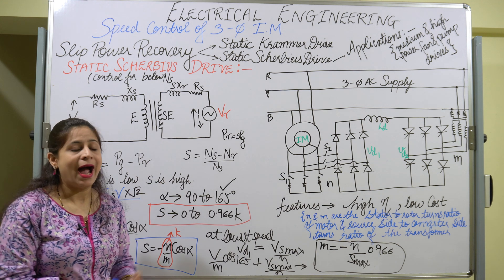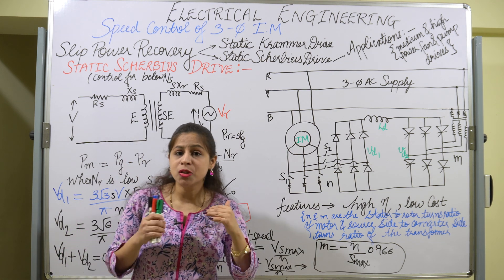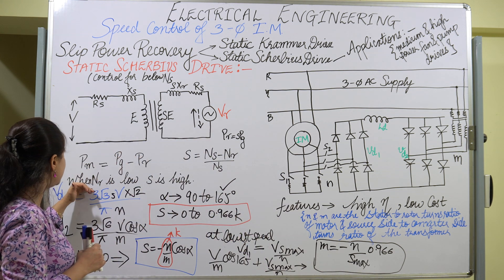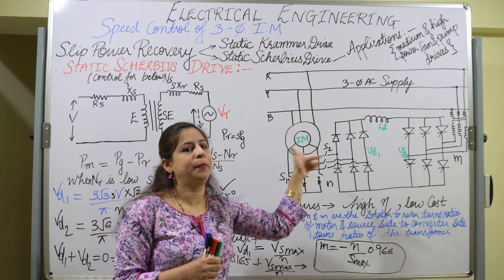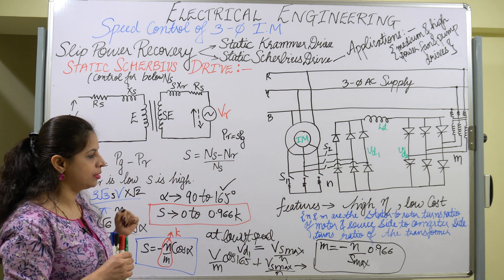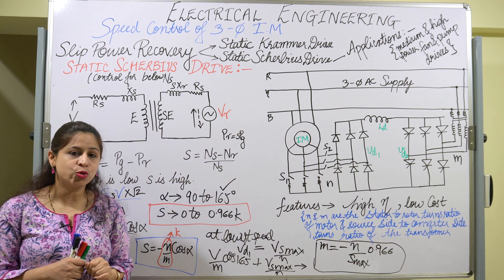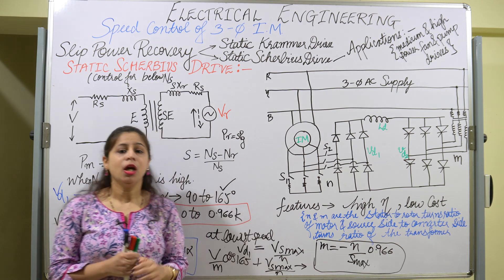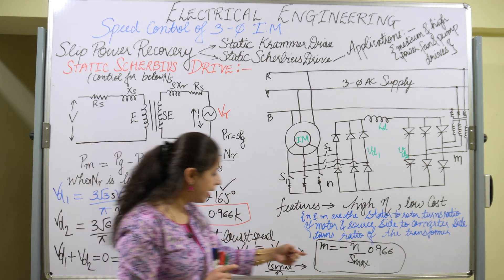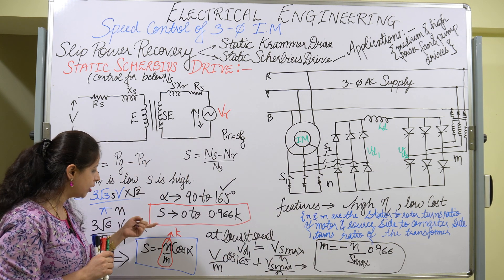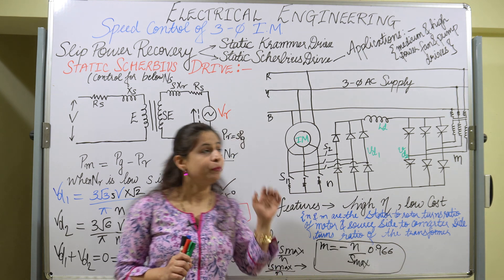M is the deciding factor for cos α and the firing angle of the inverter. By changing the firing angle, the slip is changed, and when the slip changes, the rotor speed changes. The features of this drive are high efficiency and low cost. Its application is for medium and high power fan and pump drives. The drive initially has a poor power factor, but controlling α and S helps improve it.